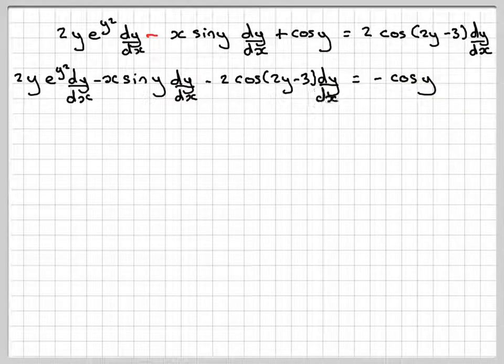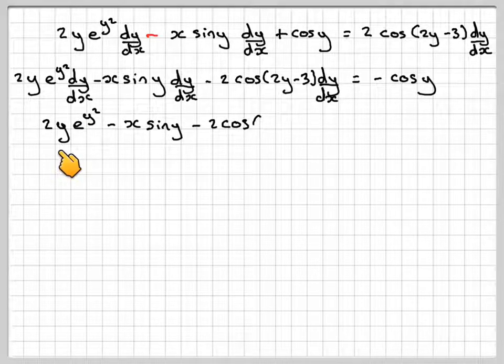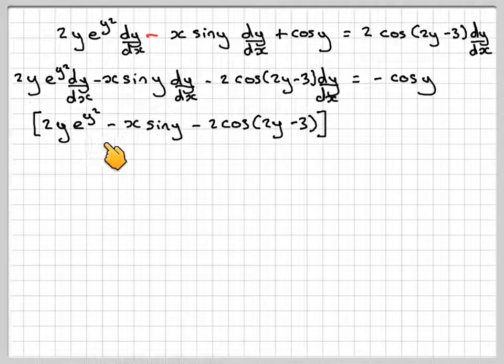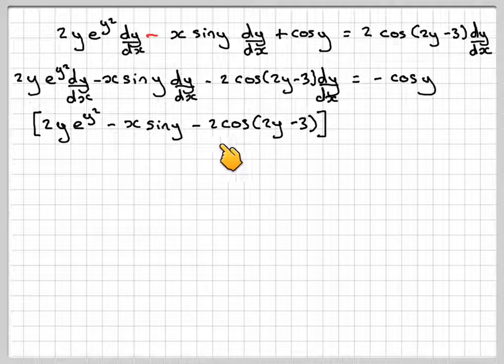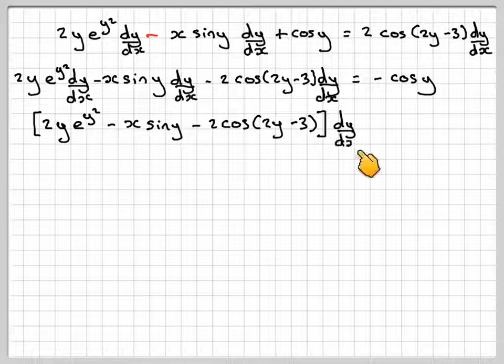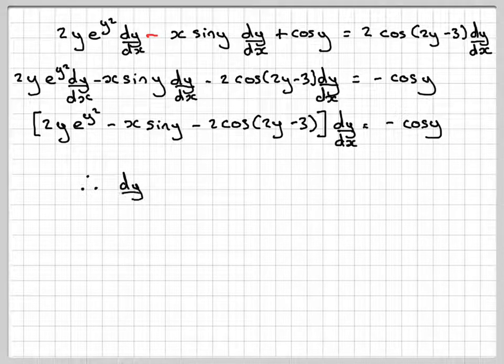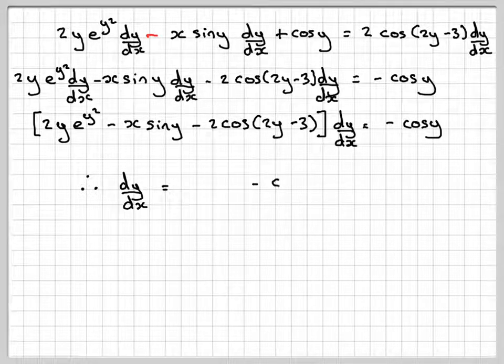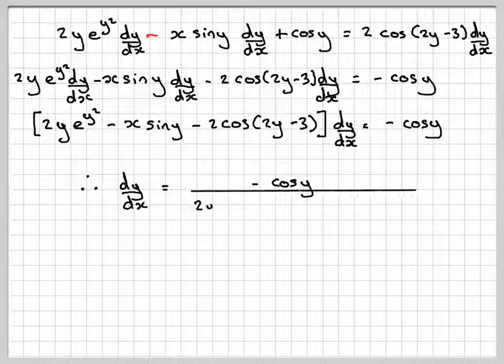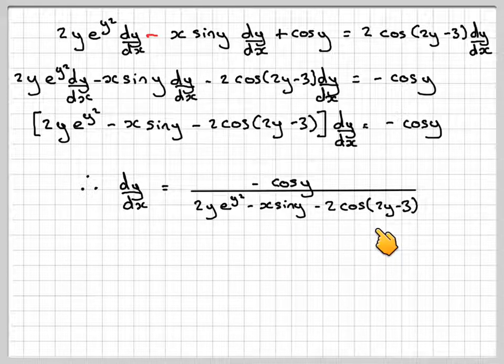So this is going to come over here, this is coming over here. There's a common factor of dy/dx. We're going to take that out. So we're going to have 2y e to the y squared minus x sine y minus 2 cos of 2y minus 3 dy/dx is equal to minus cos y. So that gives us that dy/dx is going to be equal to minus cos y divided by 2y e to the y squared minus x sine y minus 2 cos of 2y minus 3.